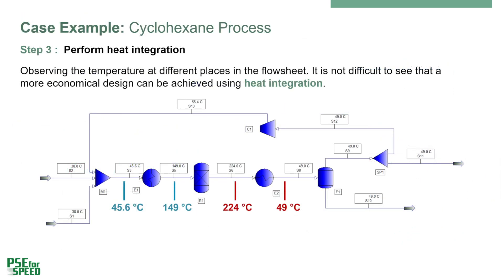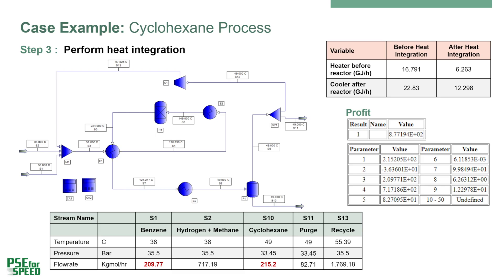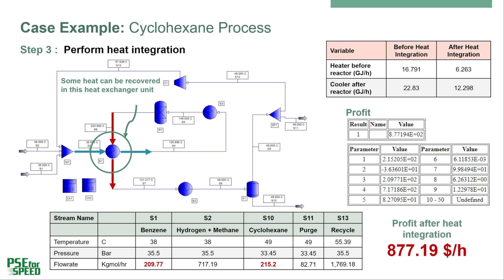Next, in step 3, we perform intuitive heat integration. Looking at the stream temperatures shown in the flowsheet, the stream before the reactor needs to be preheated, and the stream after the reactor must be cooled before entering the separation step. So it is a simple heat integration between these two streams — one needs heating and another needs cooling. After the heat integration, although we save heating and cooling utility, additional heating and cooling are needed to match the reactor and feed separator inlet conditions. Because the feed energy and cooling medium have been reduced through heat integration, our profit has now increased to around $877 per hour. However, is this the optimal process design that gives the maximum profit?